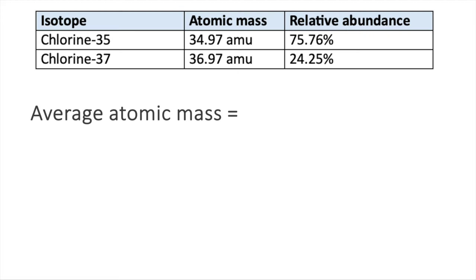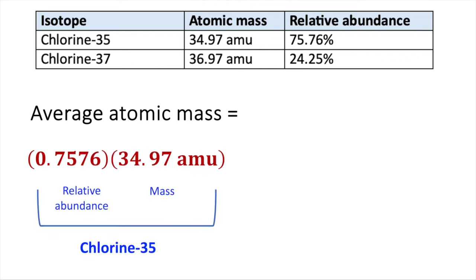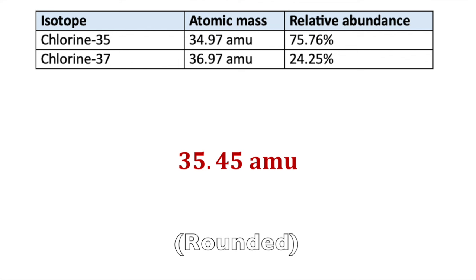Here's another example: finding the average atomic mass of chlorine. From our table, we have two isotopes of chlorine. They both have atomic number 17 but different numbers of neutrons. We translate our percentages to decimals and plug them into our equation: the relative abundance of chlorine-35 times its atomic mass, plus the relative abundance of chlorine-37 times its atomic mass. That gives us 35.45 atomic mass units, which matches the value given in the periodic table.